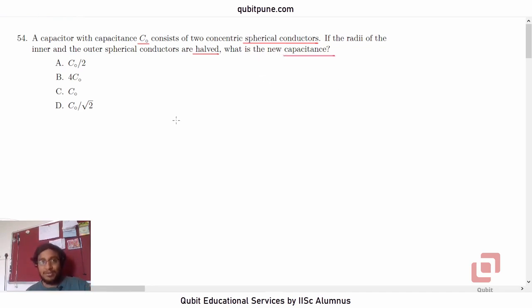This is actually a formula based example. So if you know the formula, you can solve it pretty quickly. The formula is this: suppose the spherical conductors have radii A and B, where A is the inner radius and B is the outer radius. The capacitance C₀, or in general the capacitance of any spherical capacitor with these dimensions, is given by 4πε₀AB upon B minus A. That is the formula.